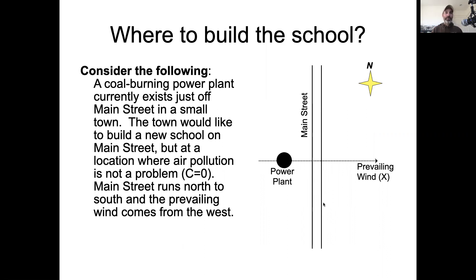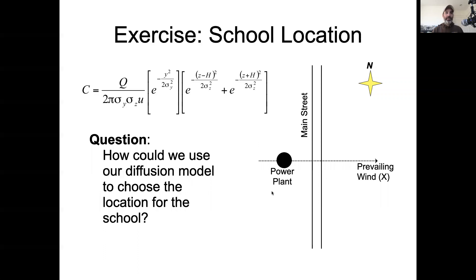They want to site the school where the pollution is not going to be a problem. Main Street runs north-south, the wind is predominantly from the west, so that will most of the time be our x direction, and there's some distance that the street is downwind. The question is, how can we use our Gaussian plume diffusion model to choose the location for the school that reduces risk?